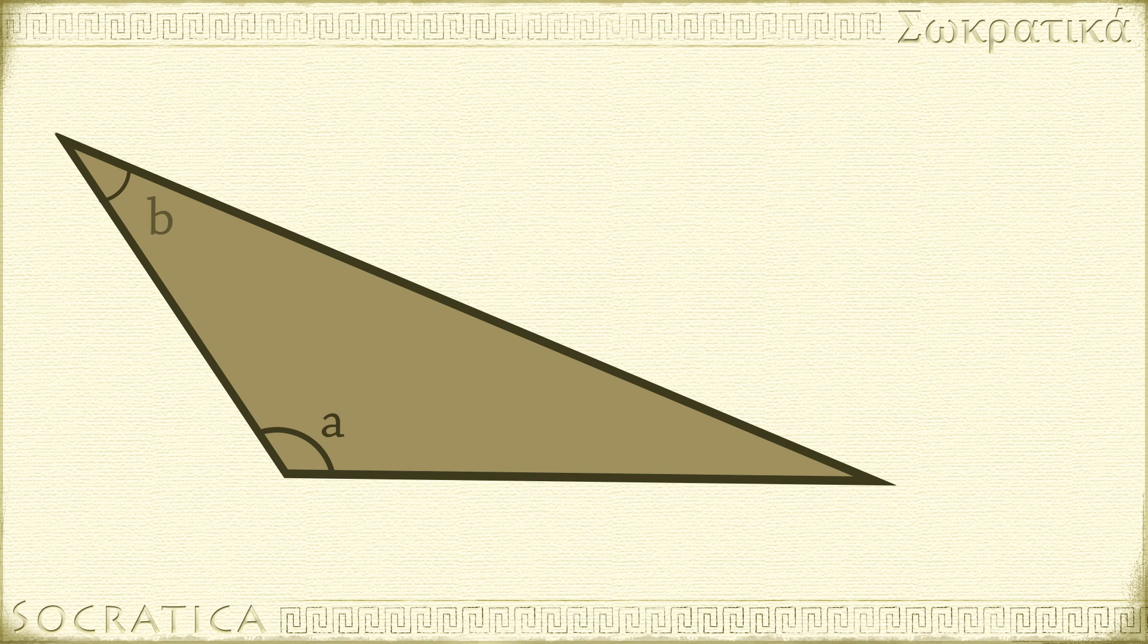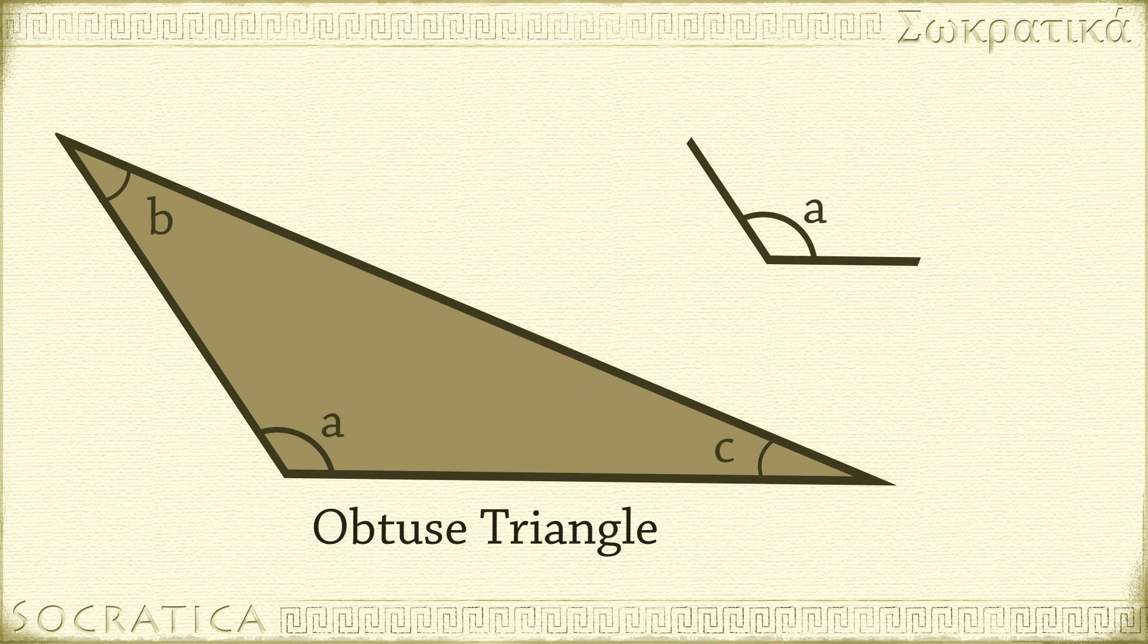If one of the angles is larger than 90 degrees, we call it an obtuse triangle. The large angle is called an obtuse angle.